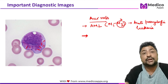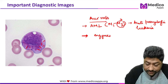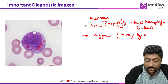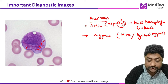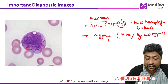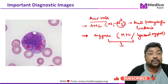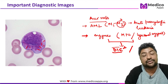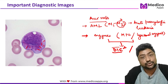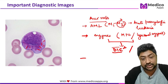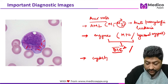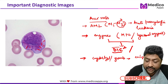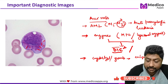Auer rods are made up of crystallized enzymes — specifically myeloperoxidases and other lysosomal enzymes. Mass destruction of these cells leads to a very important complication in AML patients: DIC (disseminated intravascular coagulation), due to activation of clotting factors by these enzymes. On staining, they appear as elongated red or pink crystals.